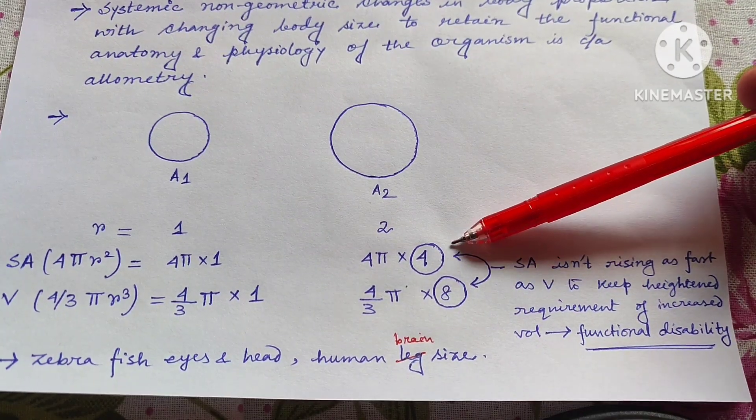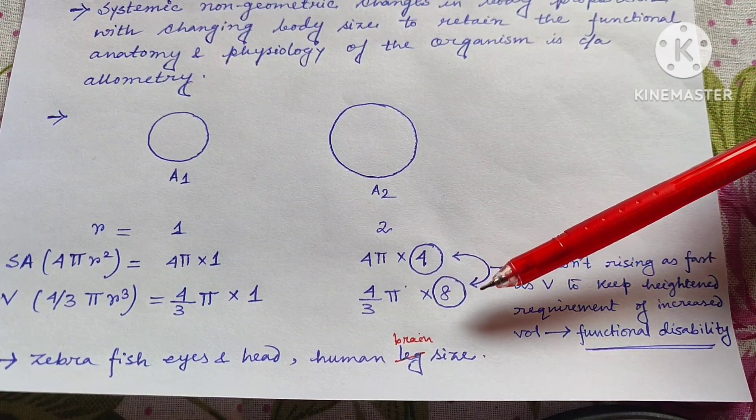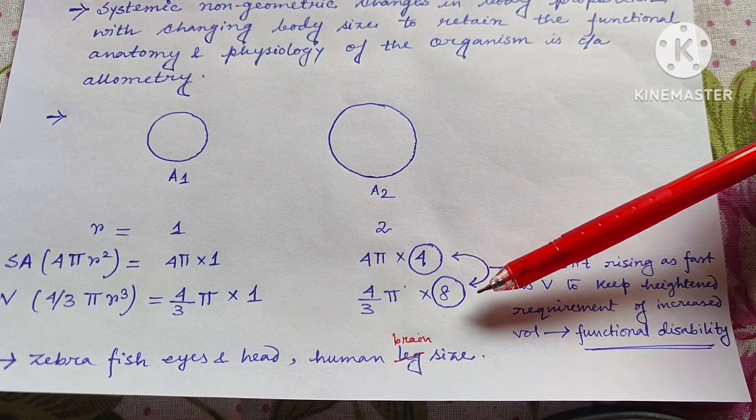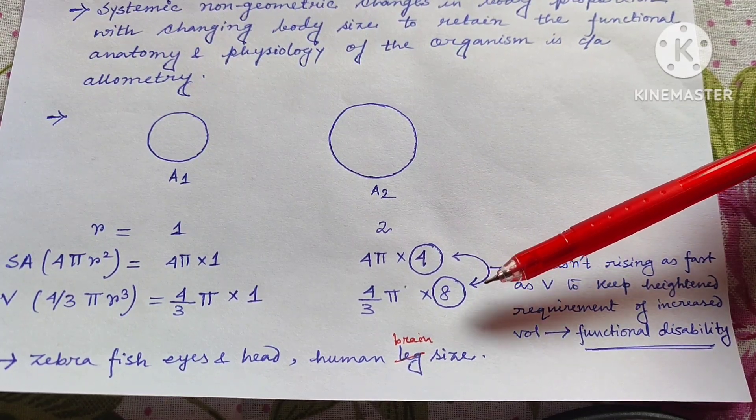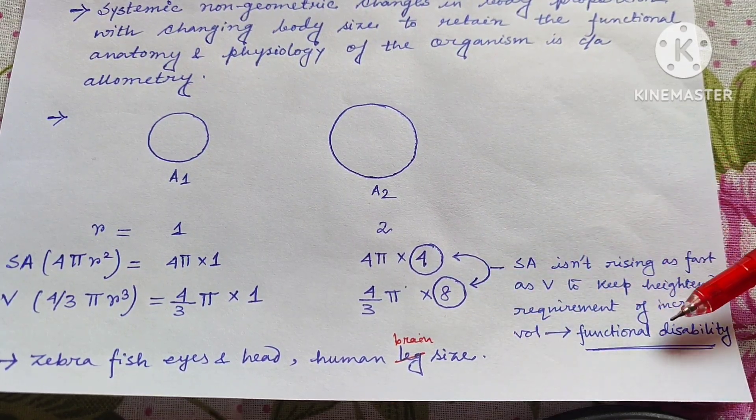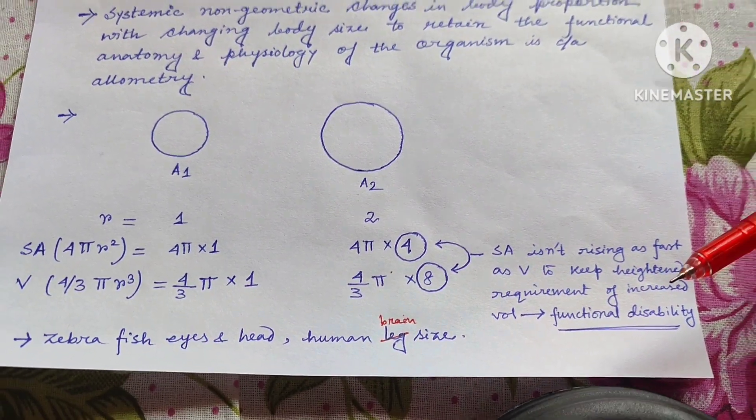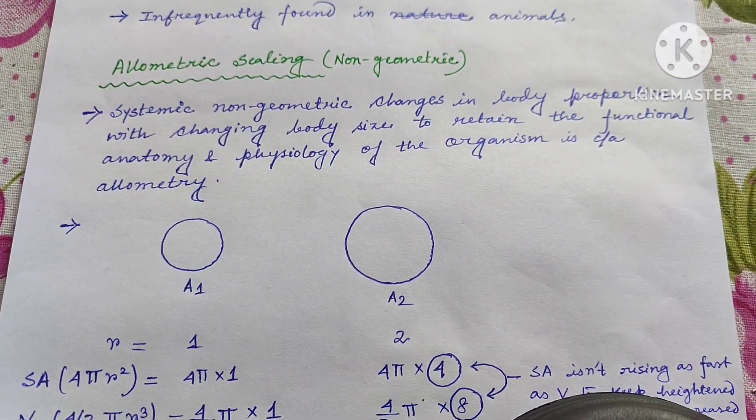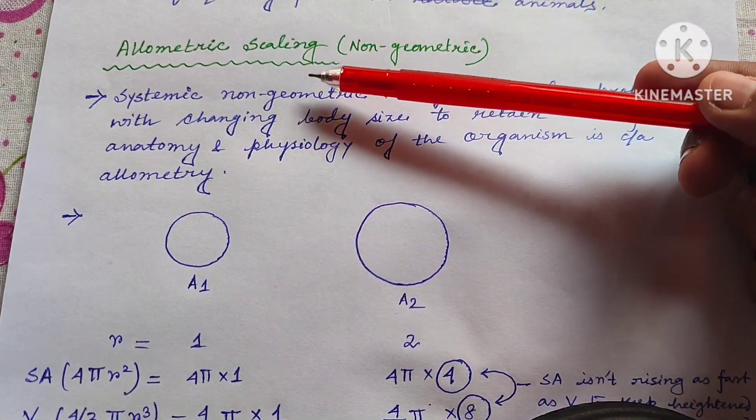But here you can see the surface area has only increased 4 times as per the isometric scaling. So this much surface area increment is not enough to meet the requirement, nutritional requirement of this much heightened volume of increase in this animal, and this leads to functional disability.